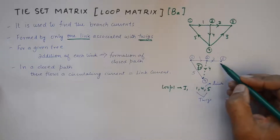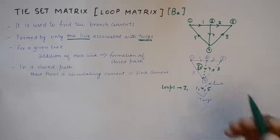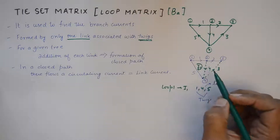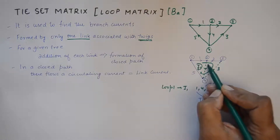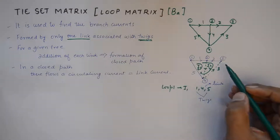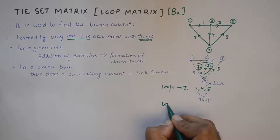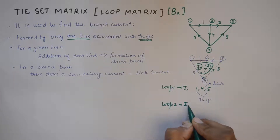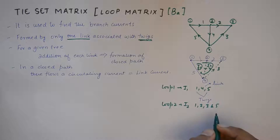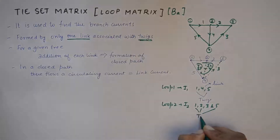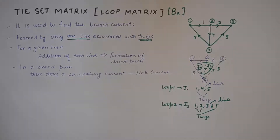We know that if we add one more link — link number three — it will again form one closed path. That closed path will be branches one, two, three, and five. So I circulate the current I2 in this bigger loop formed by the addition of link three. Loop two will have circulating current I2 within branches one, two, three, and five, where one, two, and five are twigs and three is a link.